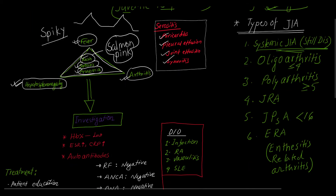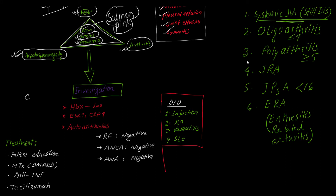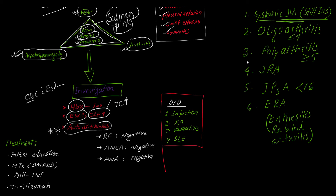How will you investigate this patient? First, complete blood count with ESR. From the CBC, hemoglobin level will be very low, and the patient may have leukocytosis — raised total WBC count. ESR will be raised and CRP will be positive and elevated, though sometimes ESR may be normal and may not correlate with clinical findings. Most importantly, autoantibodies will be negative in Still's disease.